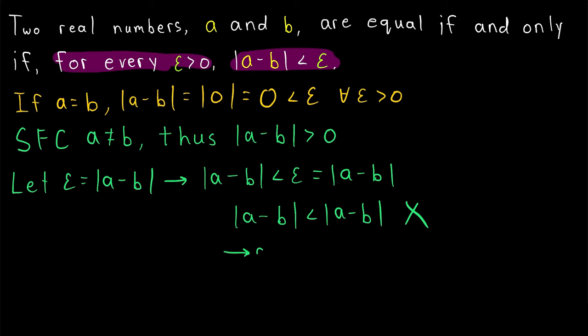Two real numbers, a and b, are equal if and only if, for every epsilon greater than zero, the absolute value of a minus b is less than epsilon.